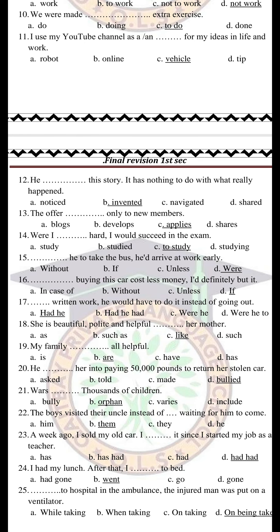Exercise number 16 might get you confused because we have two words followed by '-ing' or a noun: 'in case of' and 'without.' But we have chosen 'if.' Why? Because 'buying' here is not used in the normal way — 'buying' here is a subject. So the right answer is: 'If buying this car costs less money, I would definitely buy it.' Take care of the meaning and don't get confused.